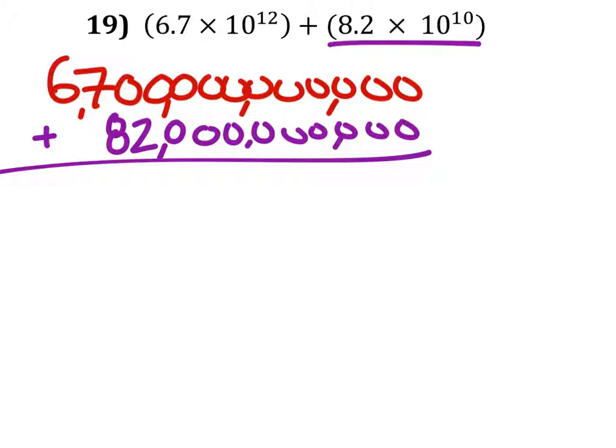And then we simply add these together, and 0 plus 0 is 0, and this 0 plus 0 is 0, and this 0 plus 0 is 0. Then we get a bunch of zeros, like these.